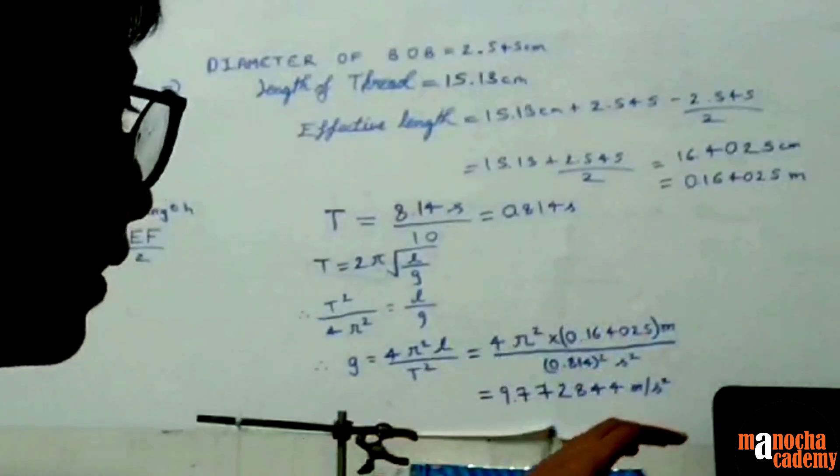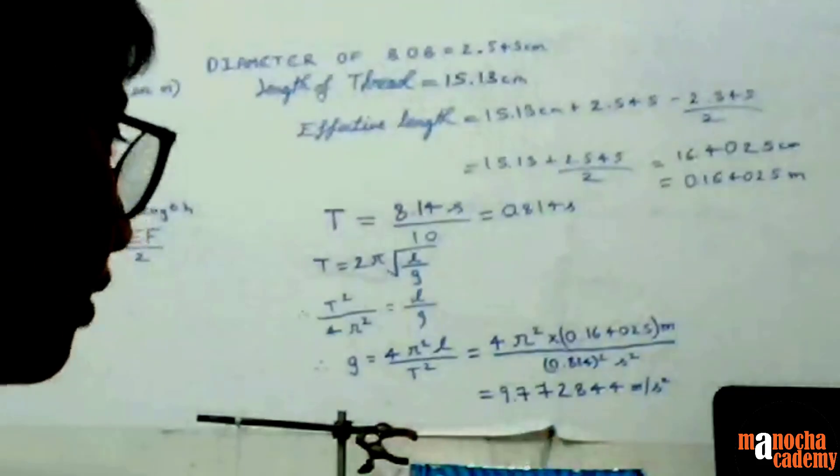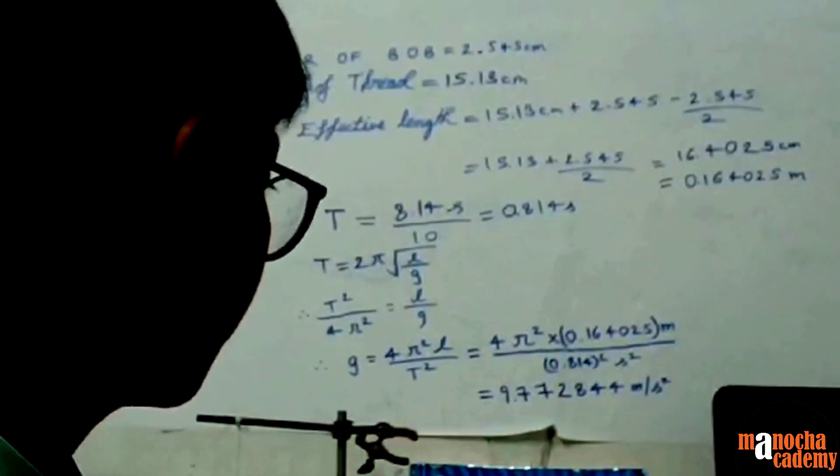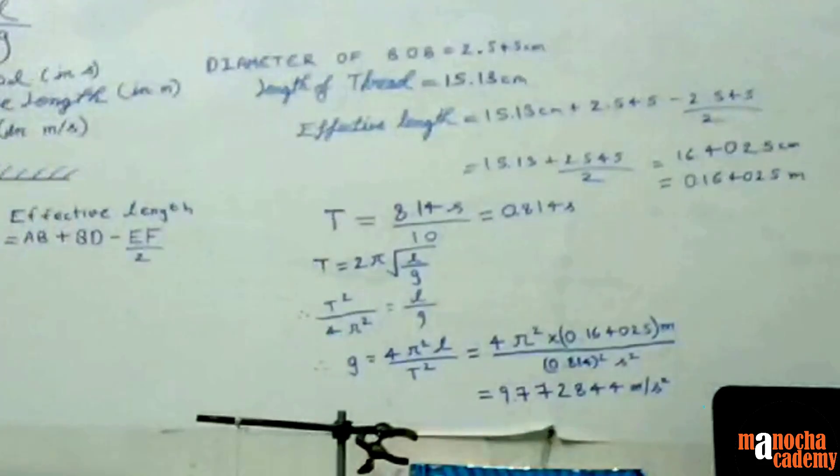Now when we simplify this, we will get the final value as 9.772844 meter per second squared, which is the value of gravity.